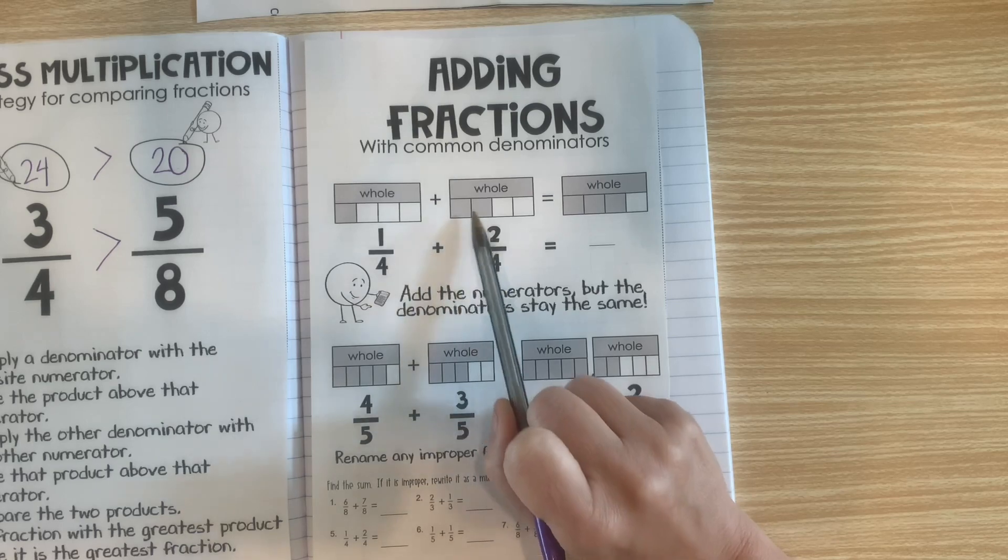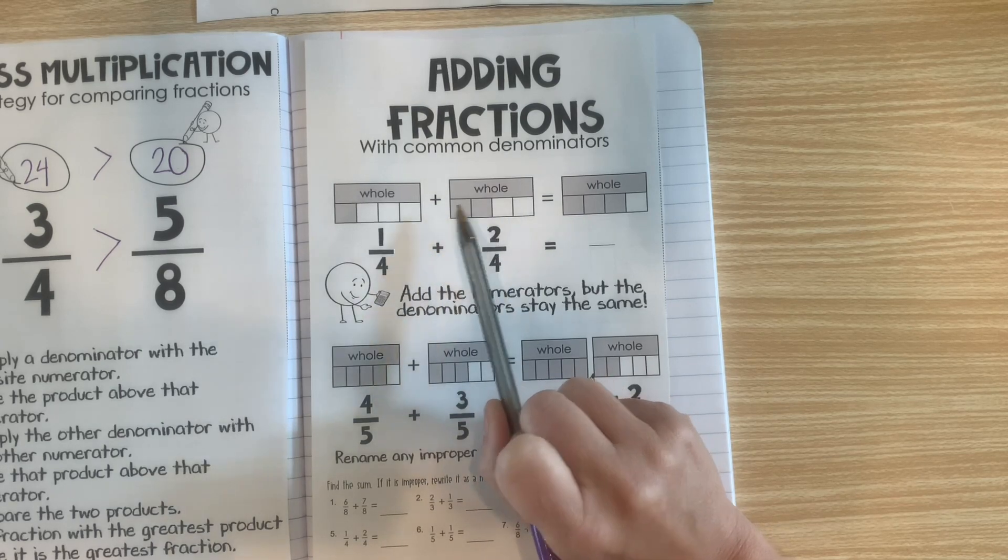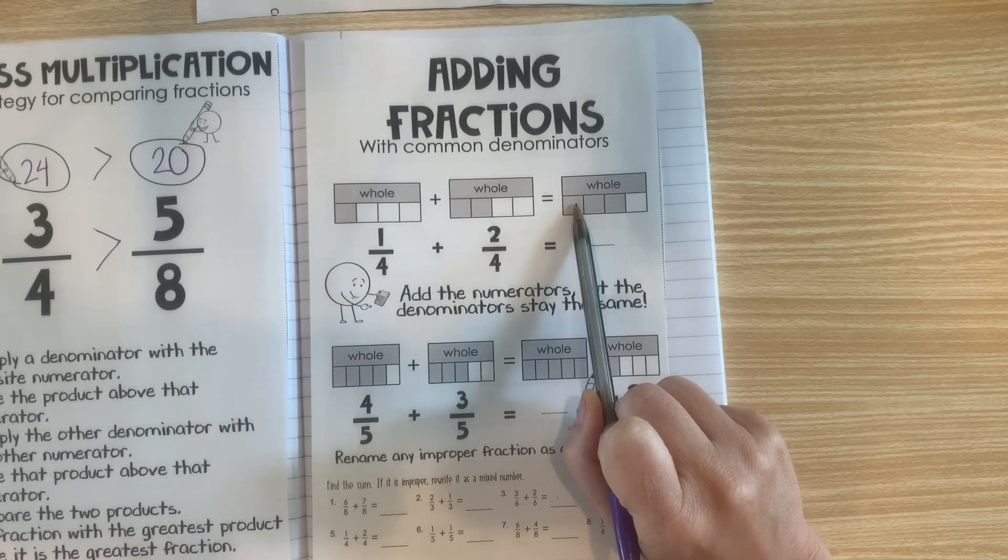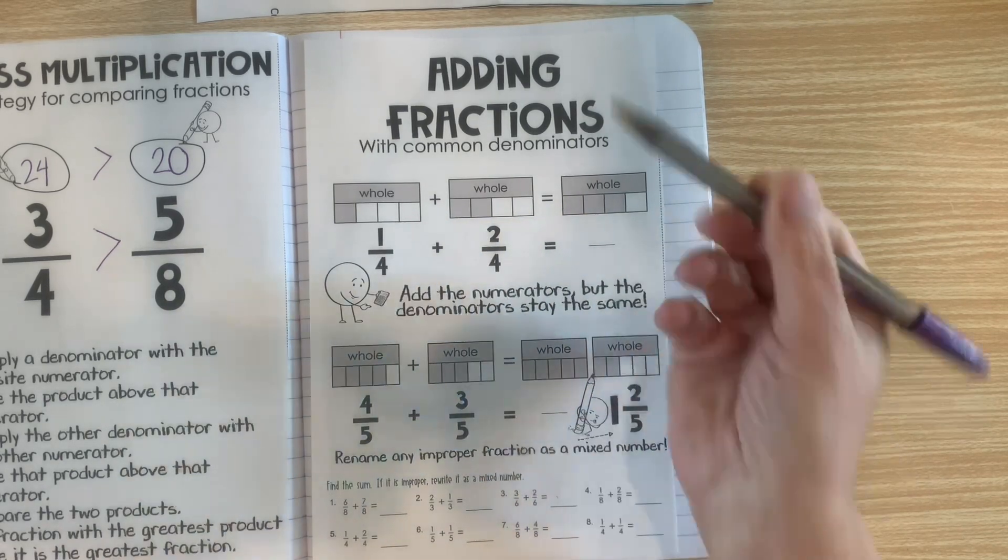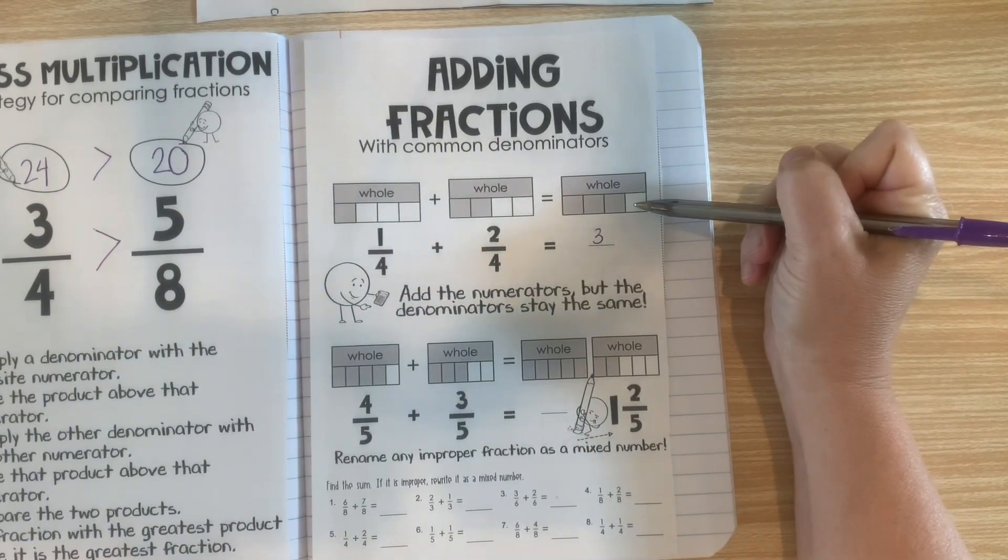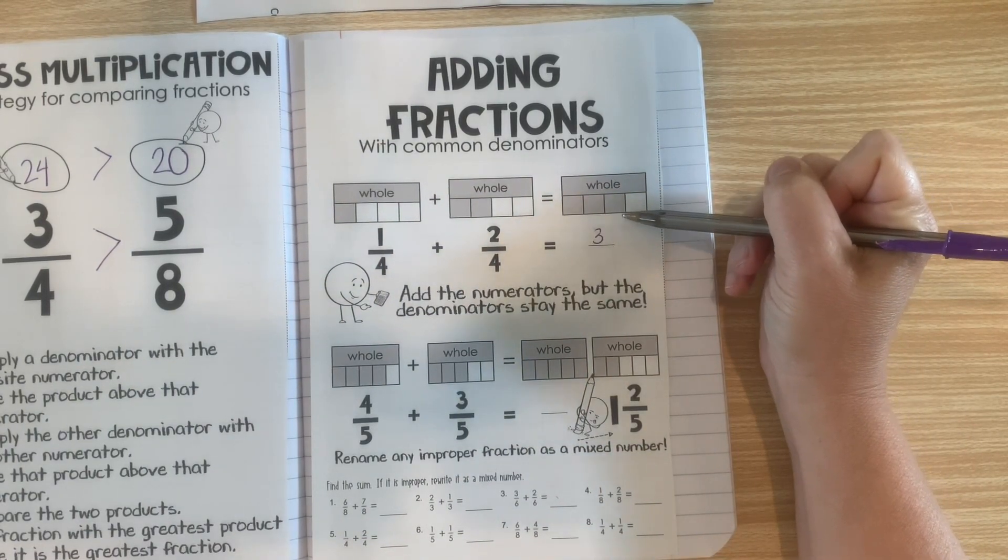Now, we're going to add on 2 fourths. So, if we add the 1 and the 2 together, we'll get 3 as our numerator. Our numerator is 3, but our denominator is still 4.